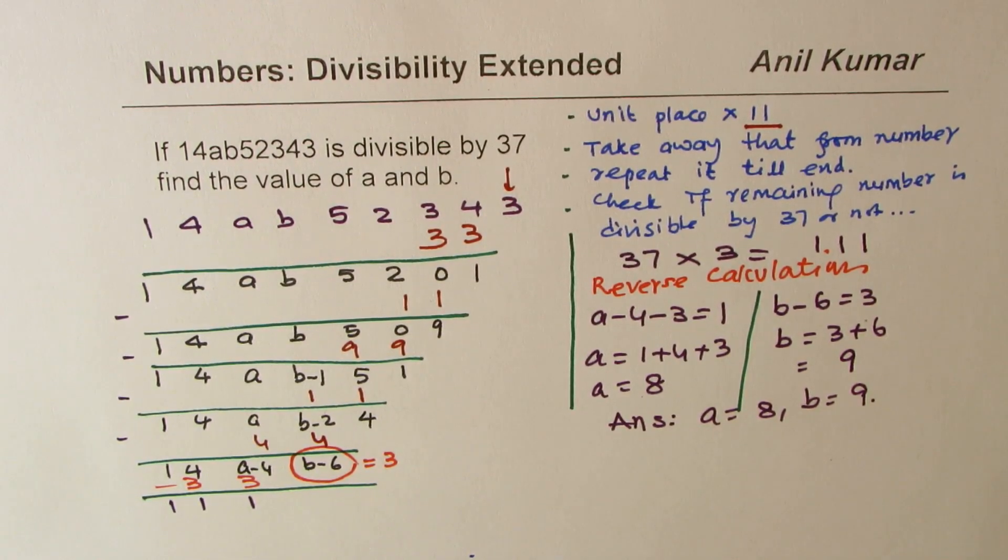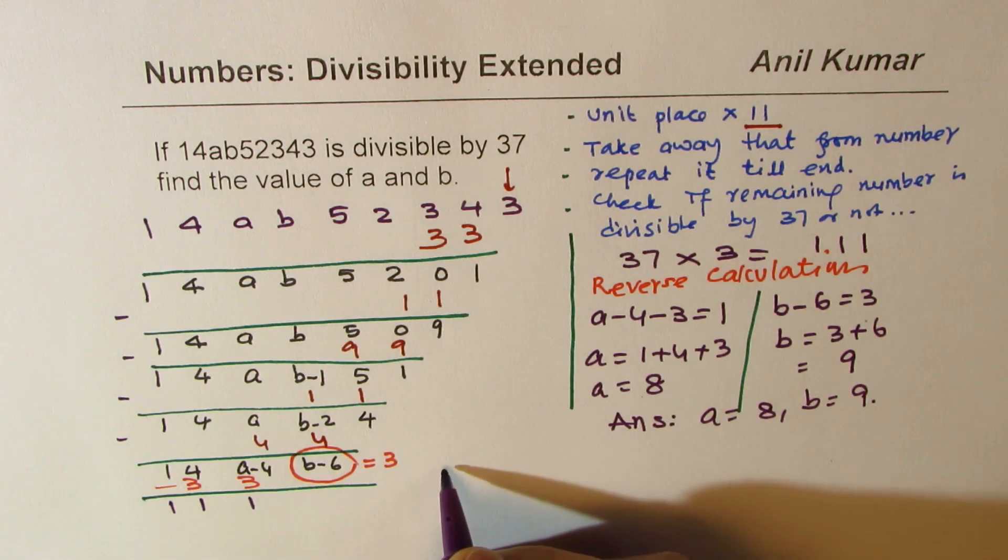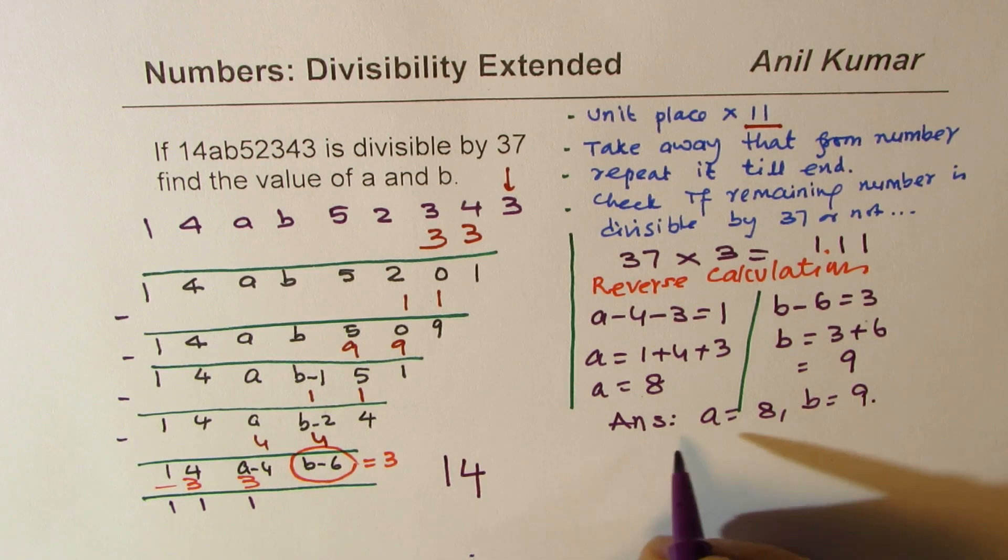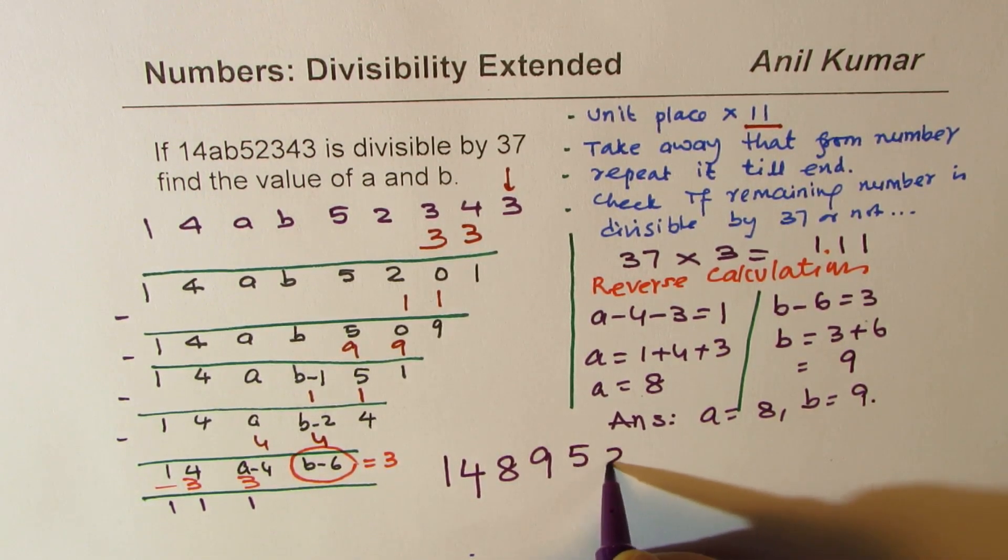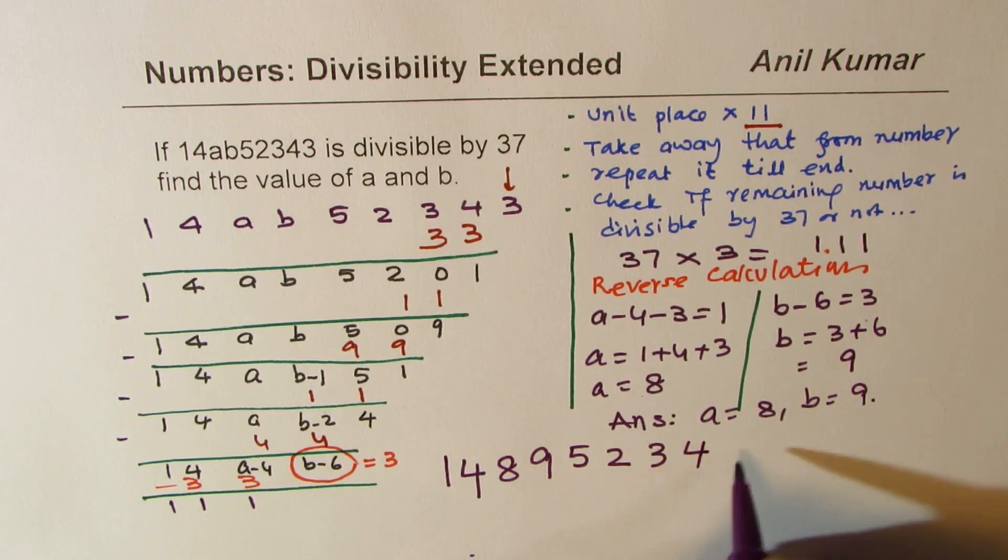Do you get an idea? So we get our answer, A equals to 8, and B equals to 9. Isn't that amazing? So the number should be 1, 4, 8, 9, 5, 2, 3, 4, 3.